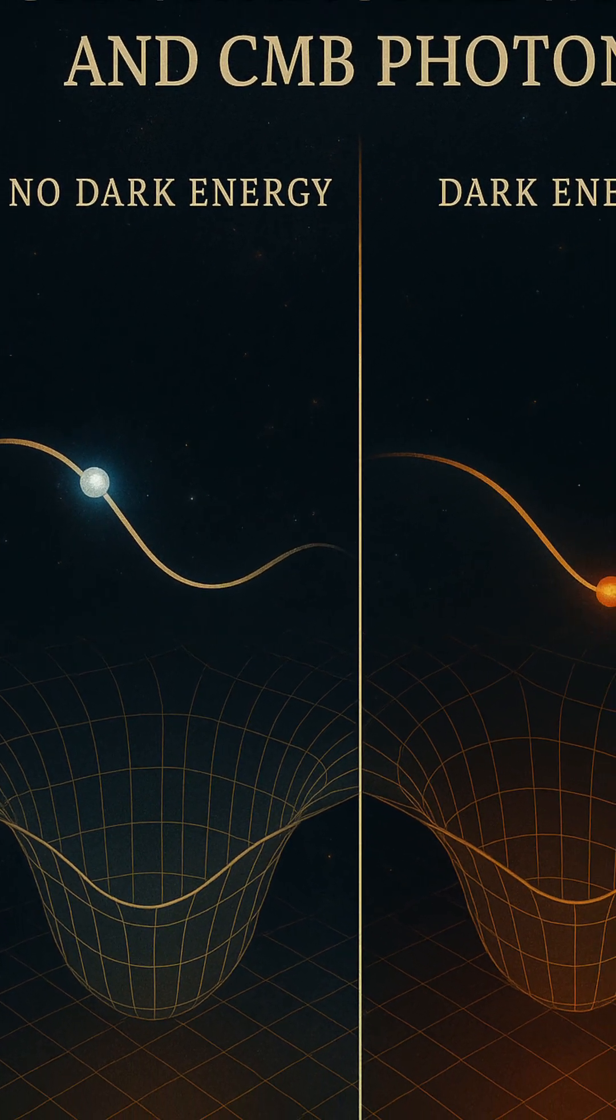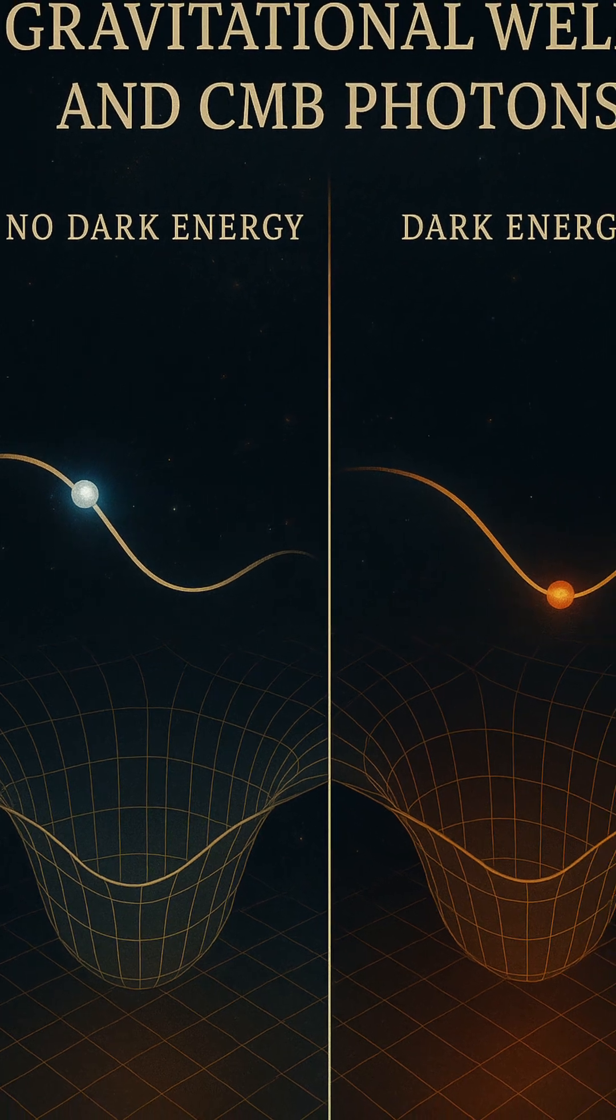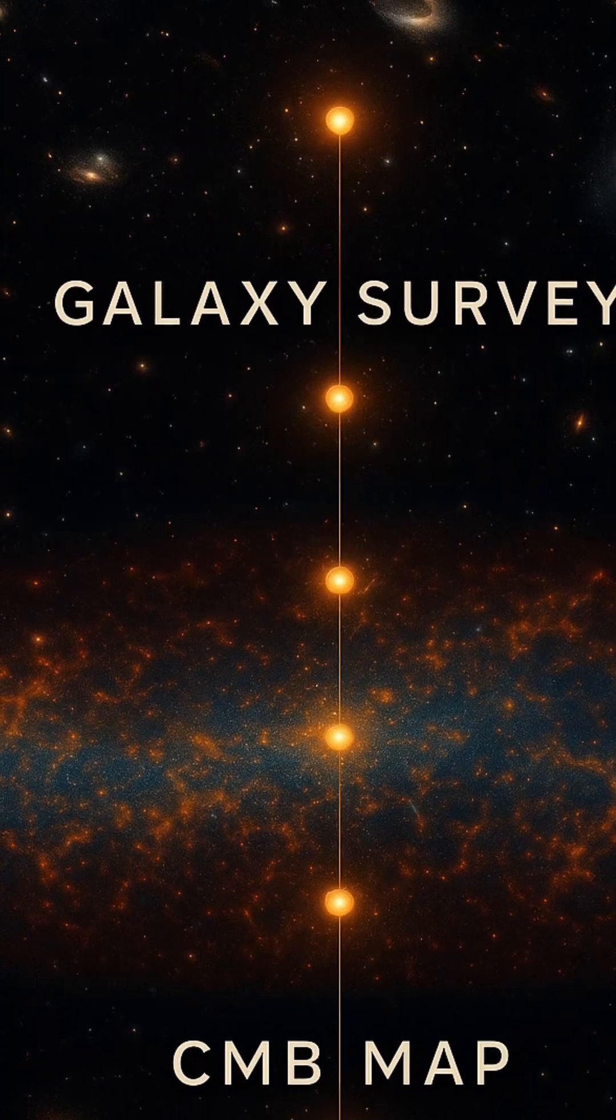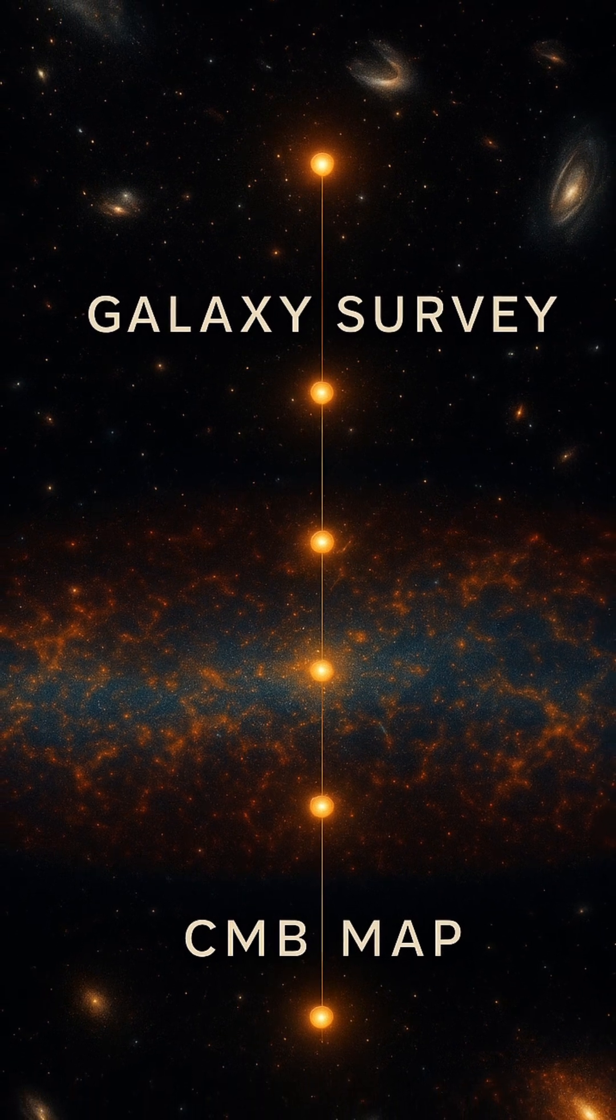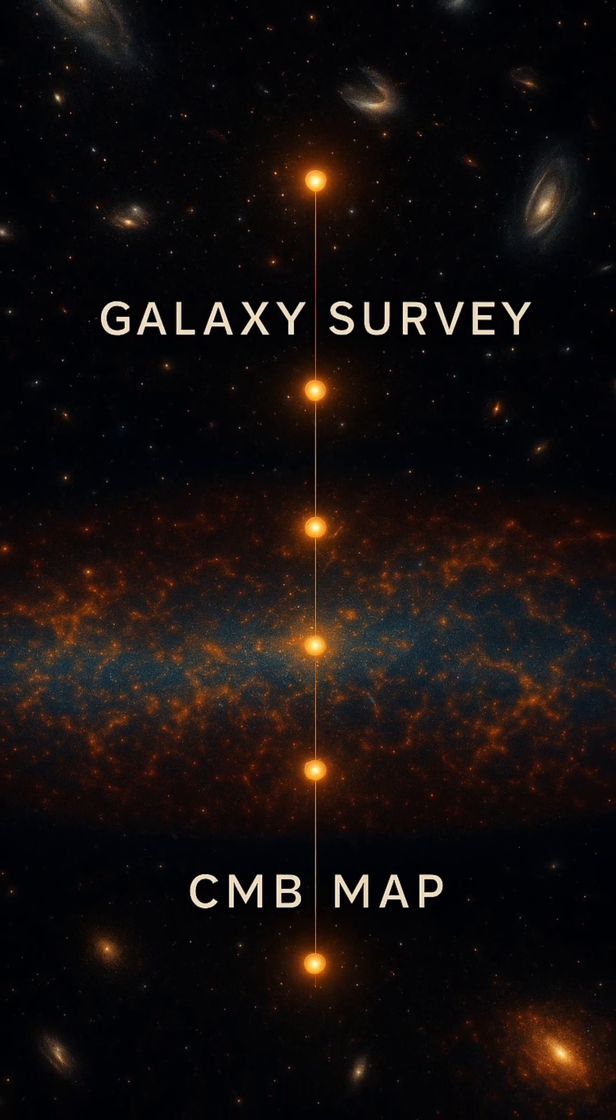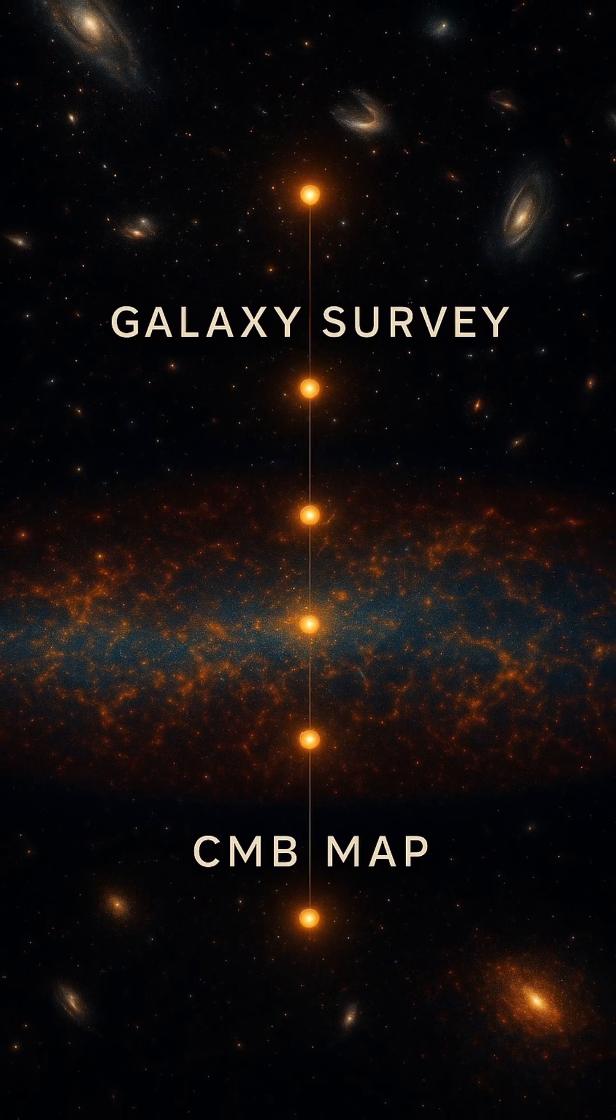Normally, as a photon falls into a gravitational well, it gains energy (blue shifts), and as it climbs out, it loses the same amount (red shifts), resulting in no net energy change.